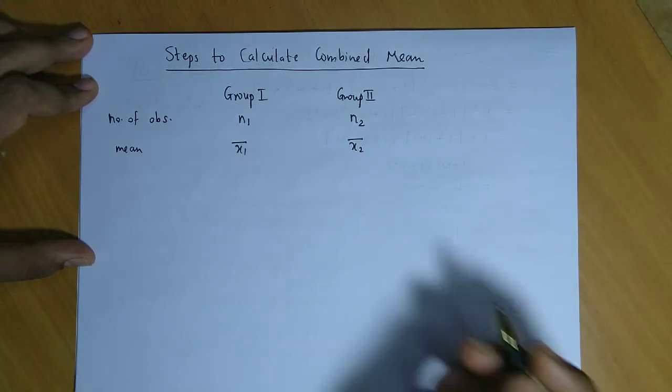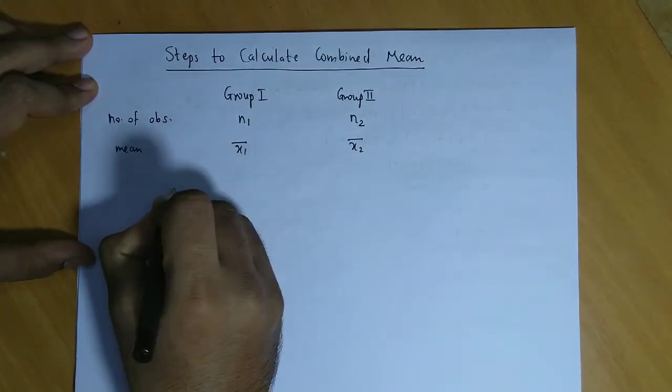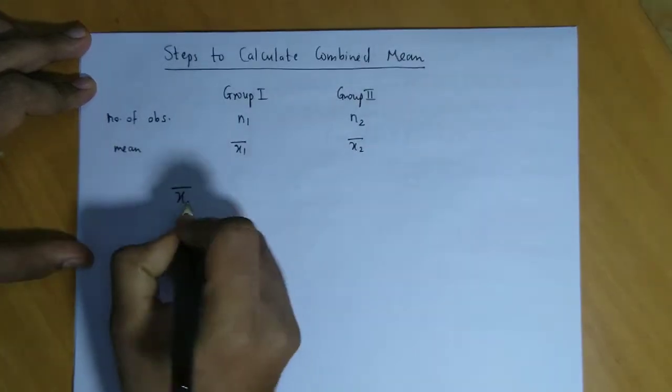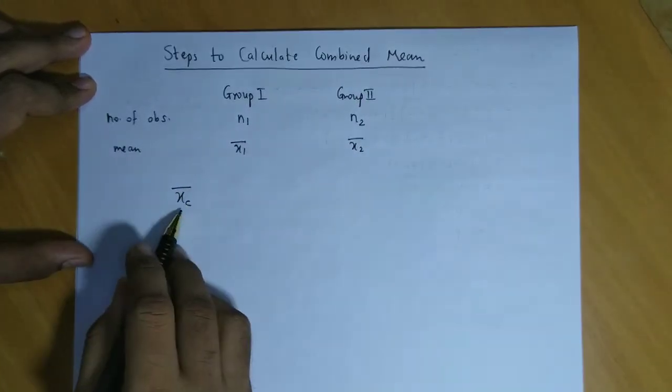Now the formula is very simple. The combined mean, that is x bar c (c for the combined value)...